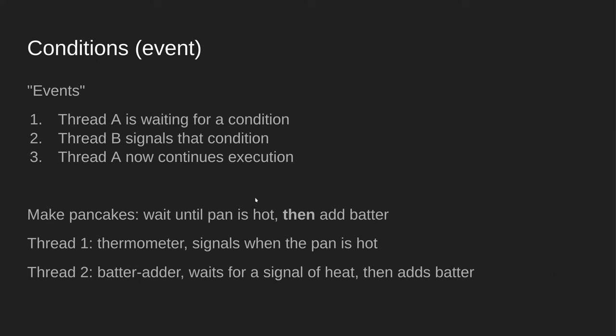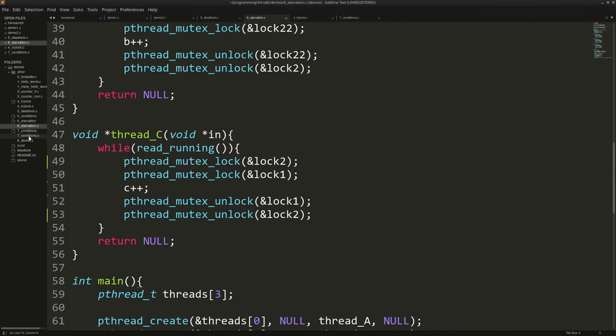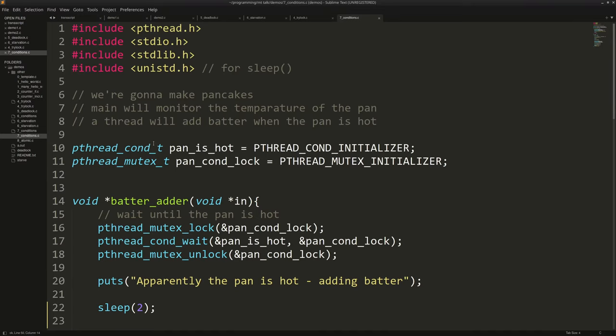Now we get to my favorite part of multithreading: conditions. Conditions are a really handy way to model the real world. The example is making pancakes — you wait until the pan is hot, and then you add the batter. Waiting until something happens is exactly what a condition variable is for. A condition in the context of multithreading means something different from the usual sense — it's a multithreaded condition, not just an if condition. I have a little demo prepared, and I'm going to take some water — I'm not used to talking for this long.